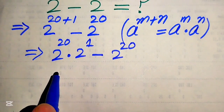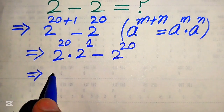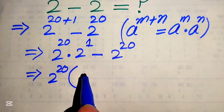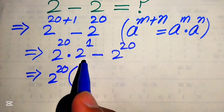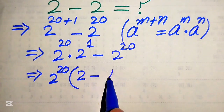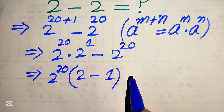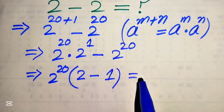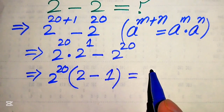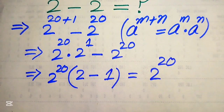Now you can see that 2 to the power of 20 is a common term. We take out 2 to the power of 20 as a common factor, and we get the remaining values: 2 minus 1. When we subtract 2 minus 1, we obtain 2 to the power of 20 only.